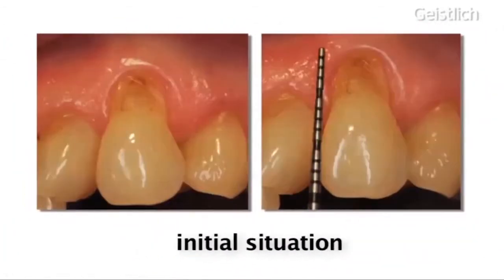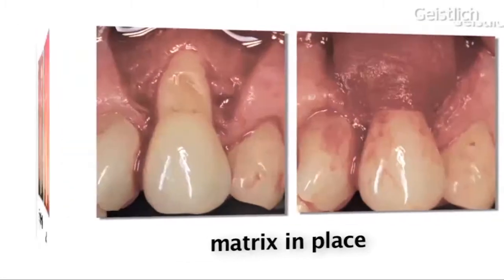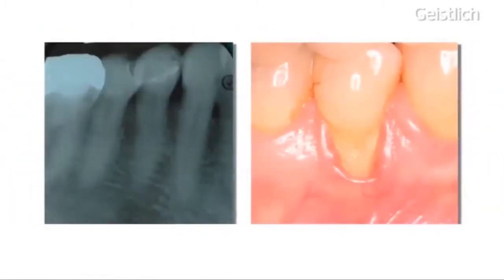Tooth number 23 has been covered previously with a mucograft matrix. No preoperative medication was needed. Having been treated very successfully with mucograft, the patient also wants her first lower right premolar covered.